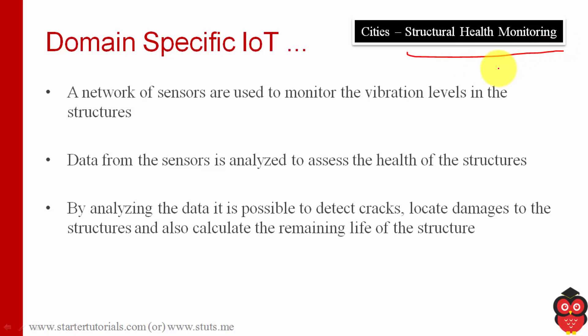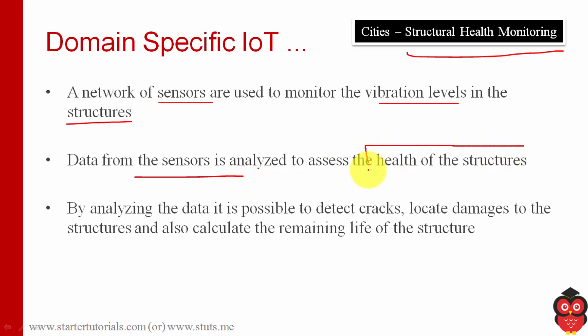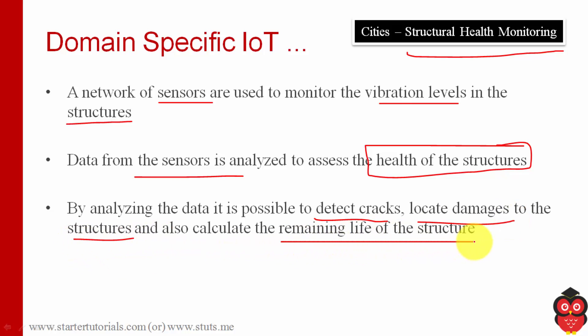The last application in smart cities is structural health monitoring — by structural health, I mean the health of buildings. Different sensors are used to monitor vibration levels in structures such as buildings, bridges, or other constructions. Data from the sensors can be analyzed to assess the health of the structure. Long before a building collapses, we can detect that it is likely to fail in the near future and take appropriate action. We can detect cracks, locate damages, and even calculate the remaining life of the structure.